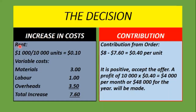For rent, the $1,000 divided by the 10,000 units gives us $0.10 per unit. The variable cost remains the same per unit. So when we add down, the total increase would be $7.60.